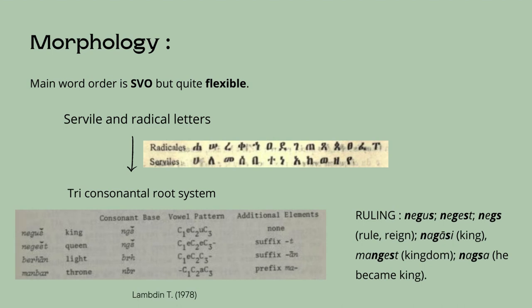As for the syntax and morphology, the main word order in Ge'ez is verb-subject-object, but it can be quite flexible. For example, in interrogative sentences, the subject and verb may switch positions, resulting in a verb-subject-object word order. A common feature of Semitic languages is that most verbs, nouns, and adjectives have a triliteral or triconsonantal root system.